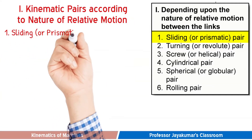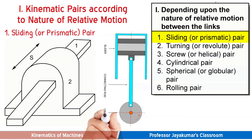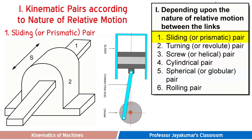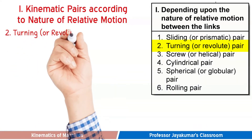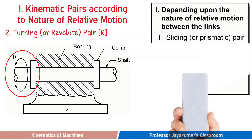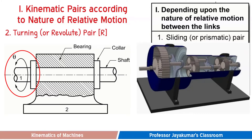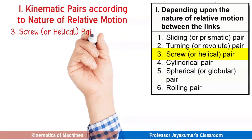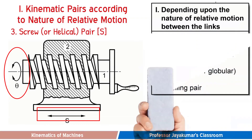First, let us discuss the sliding pair, also known as a prismatic pair. When two links have a sliding motion relative to each other, it is known as a sliding pair. In a slider crank mechanism, the piston slides, so the piston and cylinder form a sliding pair. The second type is turning pair — a shaft with two collars rotates in a bearing, forming a turning pair; in a planetary gear train the shaft turns with respect to the gear ends, forming a turning pair. The third type is the screw or helical pair, where one link has a combination of turning and sliding motion relative to the other, such as a nut and bolt.